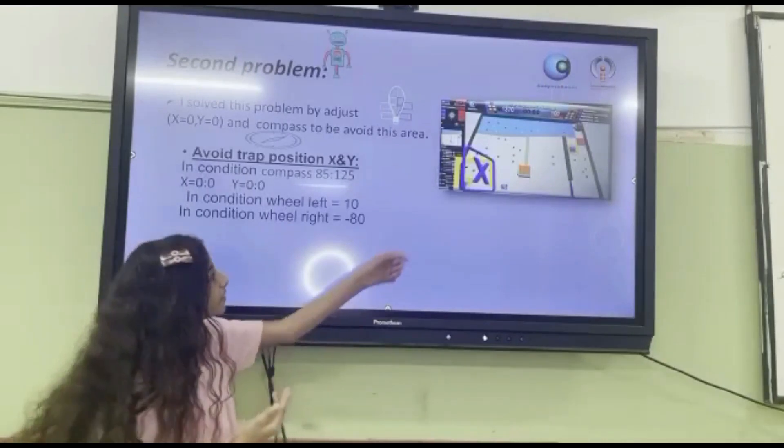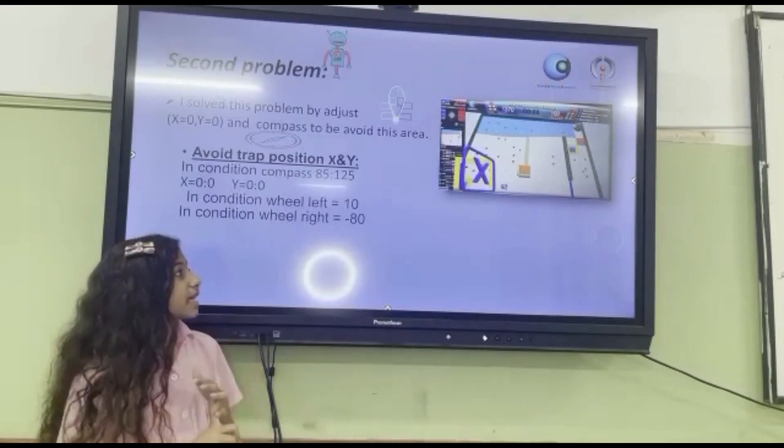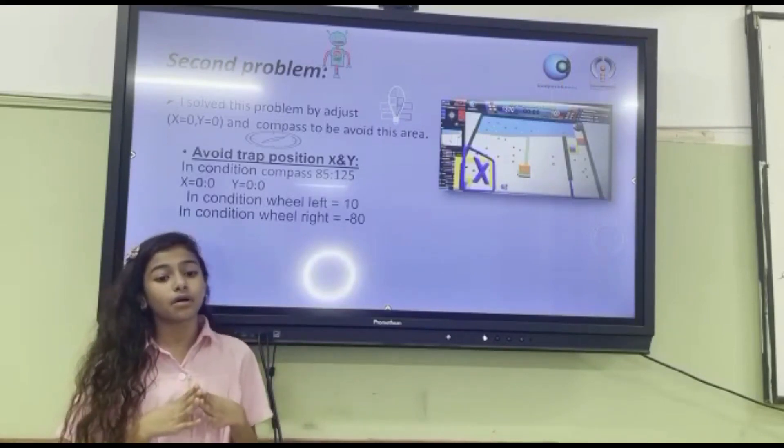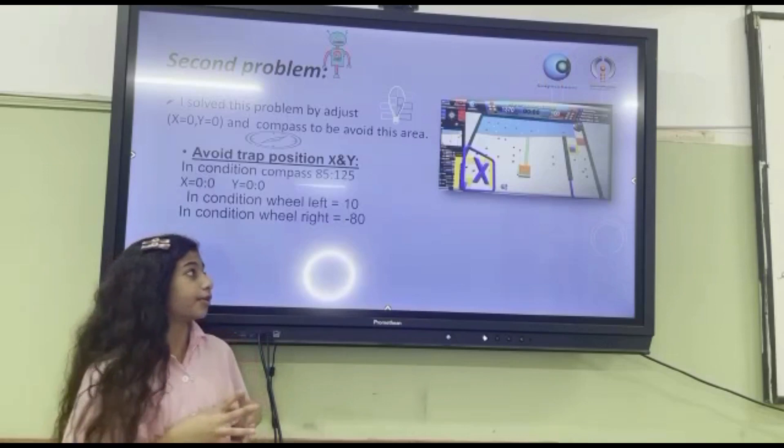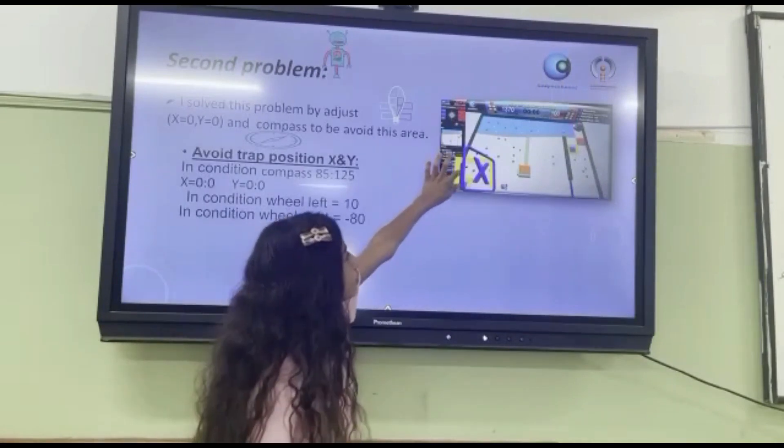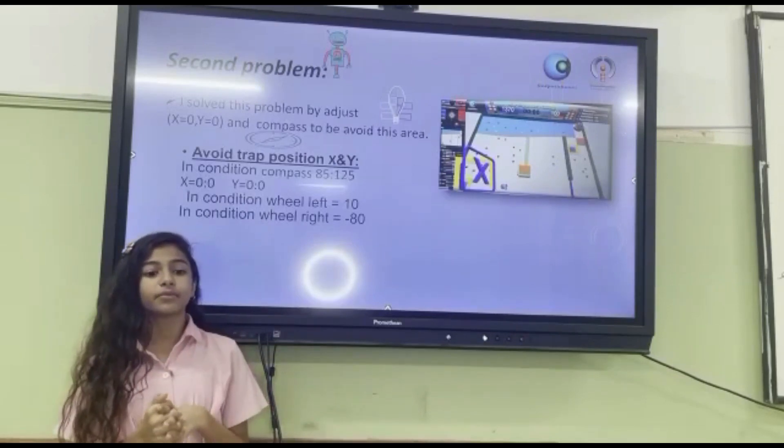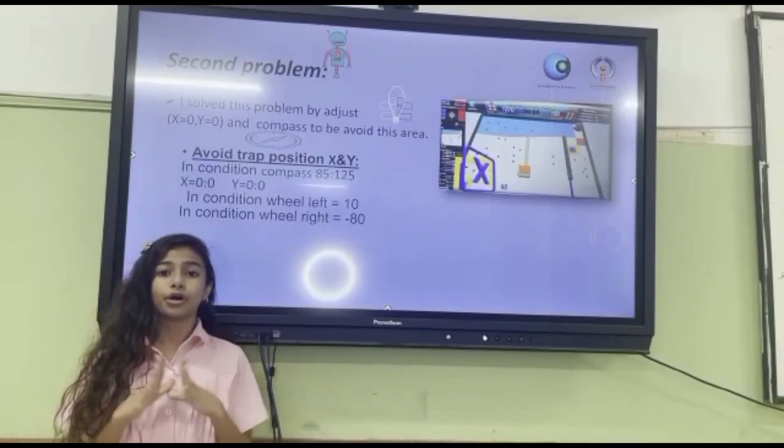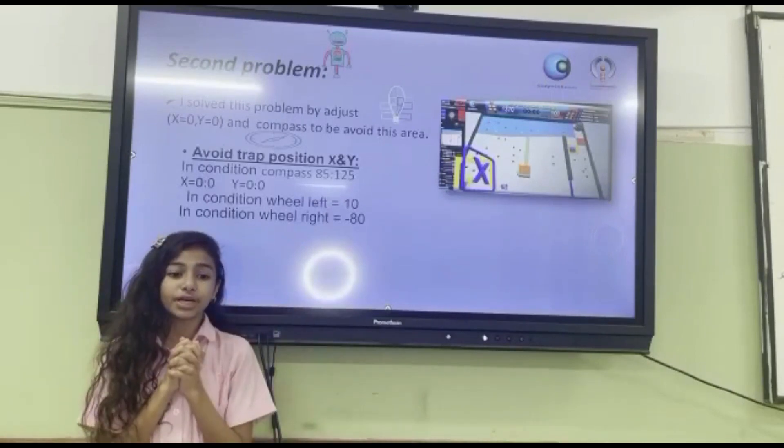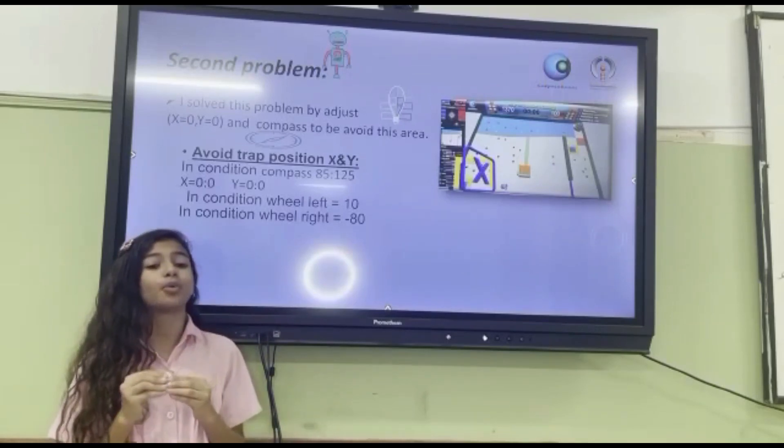Second problem: trap. I solved this problem by adjusting x and y. X equals 0, y equals 0.2, and compass to avoid this barrier. Avoid trap position x and y. In condition wheel left equals 10, wheel right equals negative 80. In condition compass equals 85 to 125.